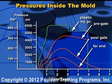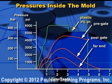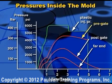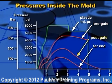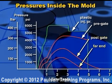This graph shows the plastic injection pressures, both packing and holding pressures at the nozzle, the plastic pressure just before the gate — the pre-gate pressure — the pressure just after the gate — the post-gate pressure — and the pressure at the far end of the cavity.